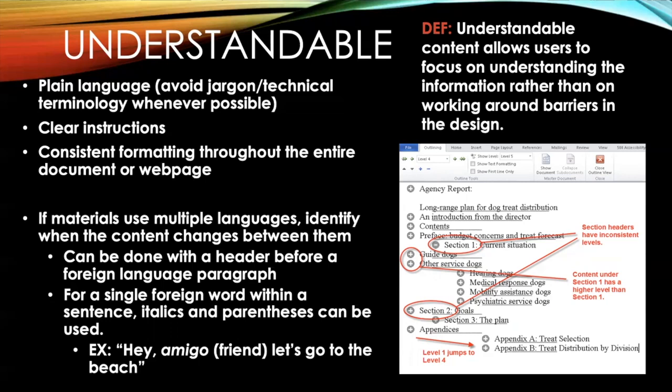One way to do this is to use parentheses to specify the translation of foreign words. For example, in the sentence 'Hey amigo, let's go to the beach,' written out I have: hey amigo (friend), let's go to the beach. In this situation, I'm using italics as a visual indicator that there is a foreign word, but also parentheses as a non-visual indicator.